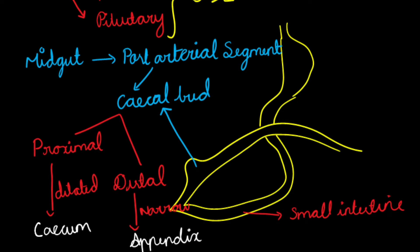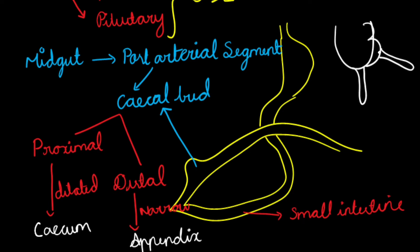The appendix arises from the apex of the cecum, but as the cecum grows wider, the appendix moves to the posteromedial aspect of the cecum. There are different types of cecum, mainly based on the position of the appendix and its movement from the apex to the posteromedial aspect. Based on this, there are three types of cecum seen in normal people.